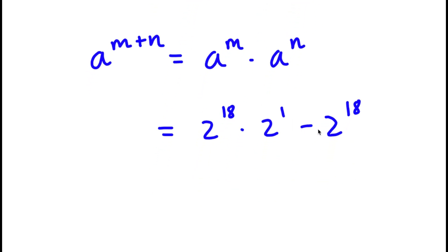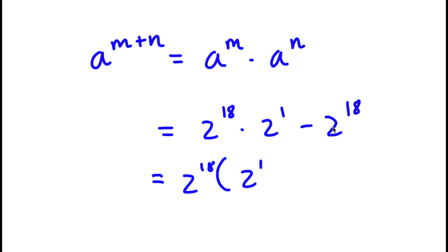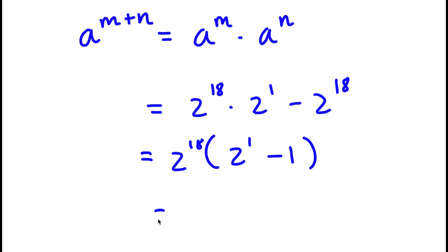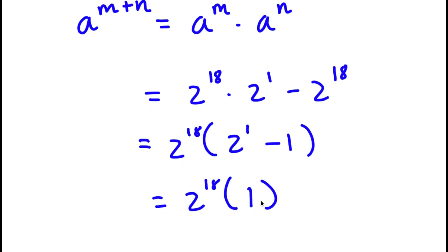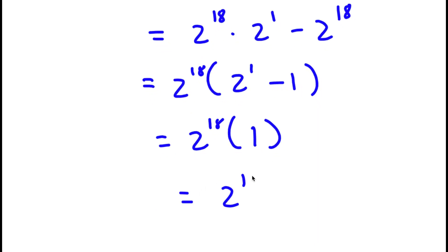Now I can factor out 2 to the power of 18. So I have 2 to the power of 18 times — 2 to the power of 18 times 2 to the power of 1 divided by 2 to the power of 18 is simply 2 to the power of 1, and negative 2 to the power of 18 divided by 2 to the power of 18 is negative 1. So this is 2 to the power of 18 times 2 minus 1, which equals 2 to the power of 18 times 1, which is simply 2 to the power of 18.